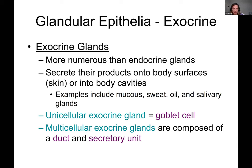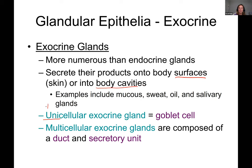Exocrine glands secrete externally — secreting products onto the surface of the body or into open body cavities. They're way more numerous than endocrine glands. Examples include sweat glands, oil glands, salivary glands, and mucus-secreting glands. We have unicellular exocrine glands — a single cell releasing products, like a goblet cell — and multicellular exocrine glands with many cells. We'll also discuss exocrine glands more in Chapter 5 when we cover the skin.